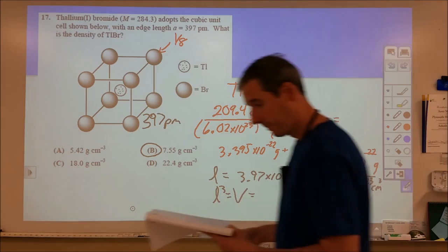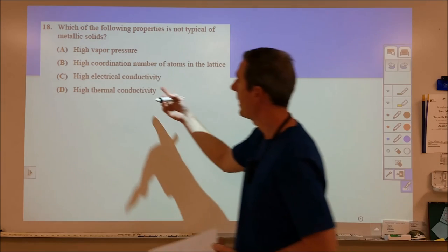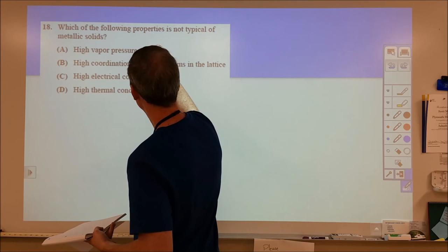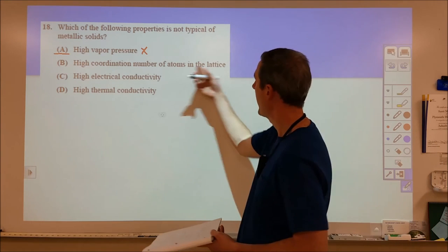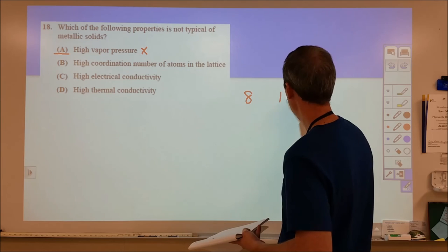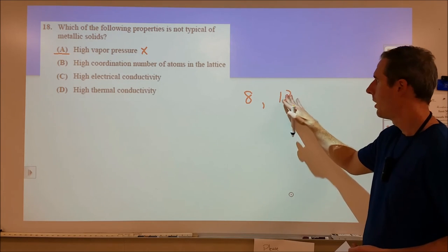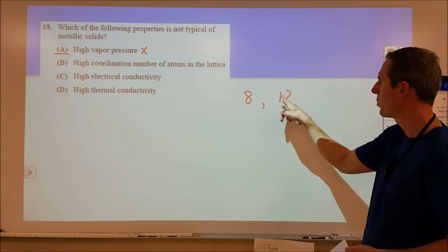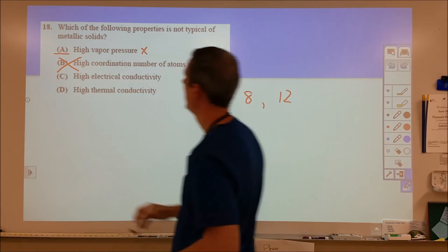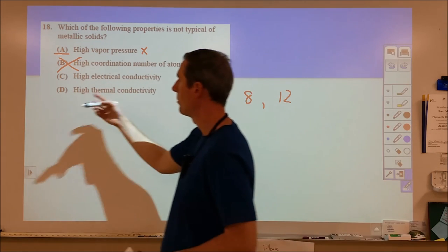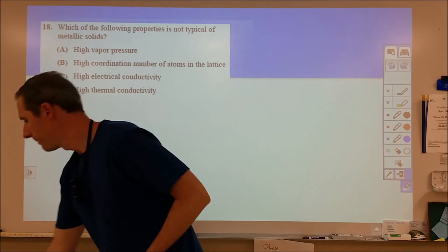All right. Moving on from there. 18 is a pretty simple question. Metallic solids are going to stick together decently well. So, we would not expect high vapor pressure. So, that's probably our answer. High coordination number of atoms in the lattice. Usually, they're going to have a coordination number of 8 or 12. If it's a body centered cubic, or if it's a face centered cubic, or cubic closed packed. It's going to be 12 or 8 for the coordination number, which is about as high as you reasonably could get. So, B is definitely not our answer. High electrical conductivity is definitely a property of metals. High thermal conductivity is definitely a property. We'll go back and we'll circle A.